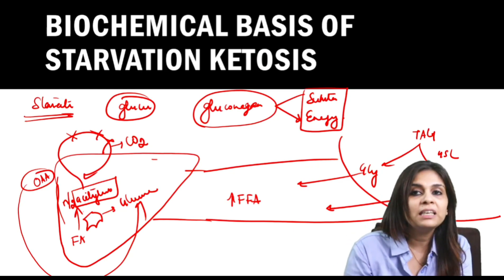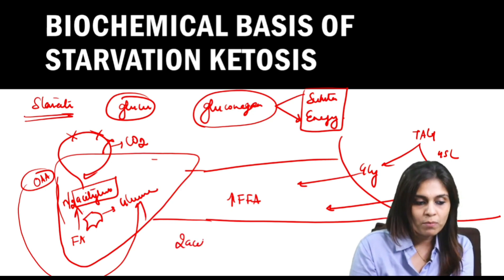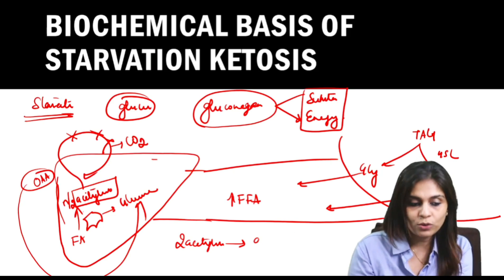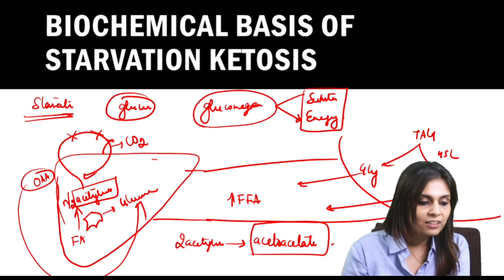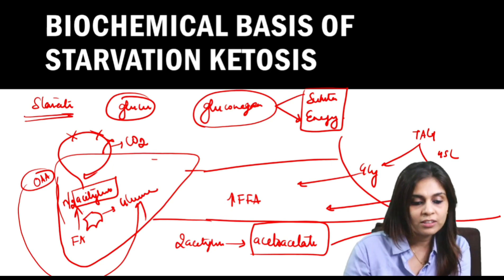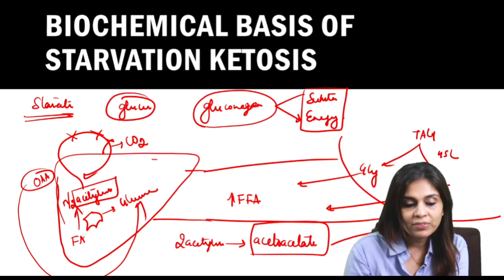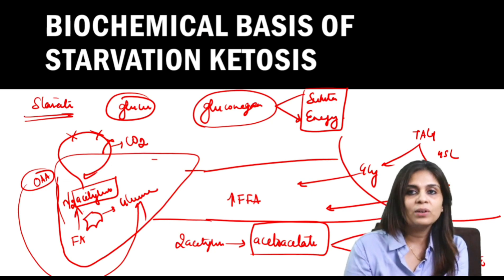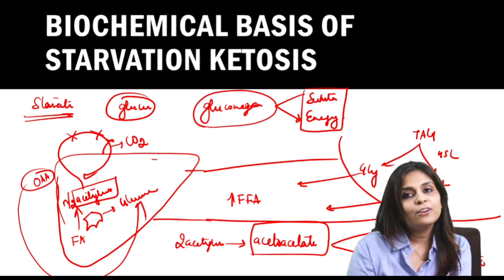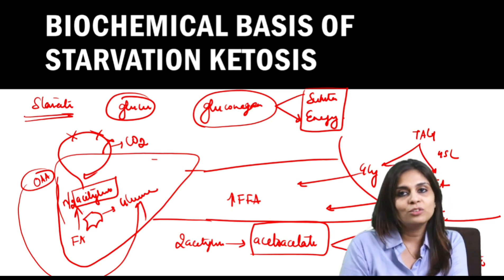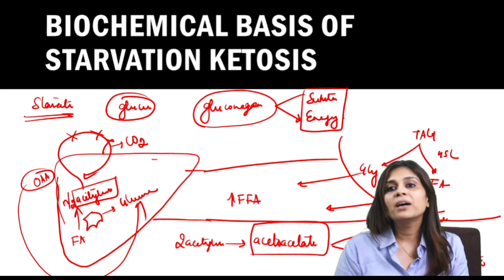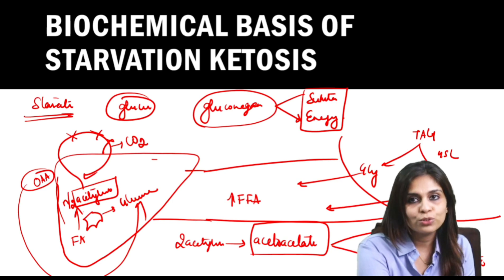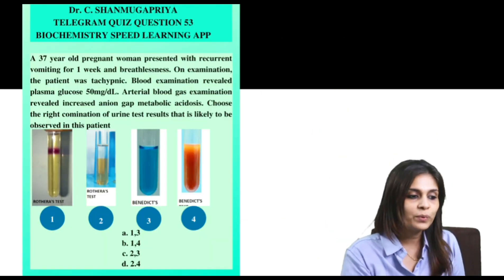On accumulation, acetyl CoA condenses to form ketone bodies. Two acetyl CoA condense to form the first ketone body, which is acetoacetate — the primary ketone body. Acetoacetate on spontaneous decarboxylation forms acetone, a secondary ketone body. The same acetoacetate can also be converted to beta-hydroxybutyrate. So the three ketone bodies are: acetoacetate (primary), and acetone and beta-hydroxybutyrate (secondary). This is the biochemical basis of starvation ketosis.